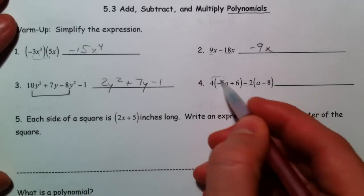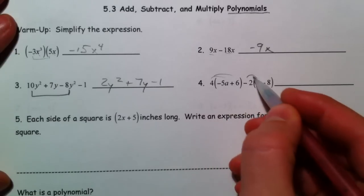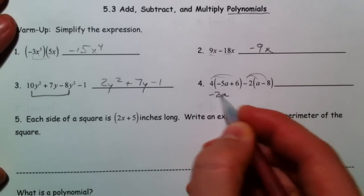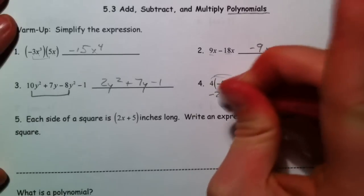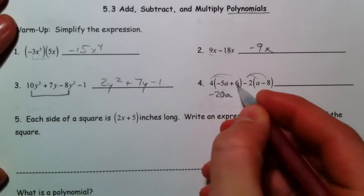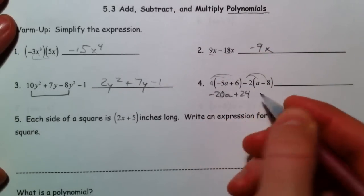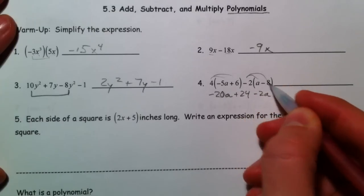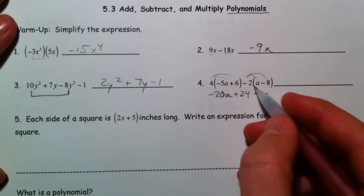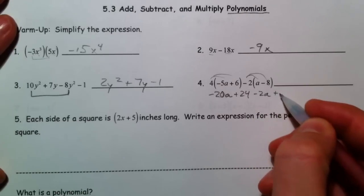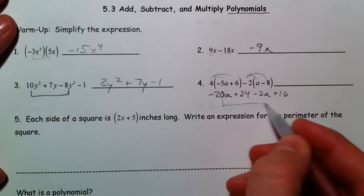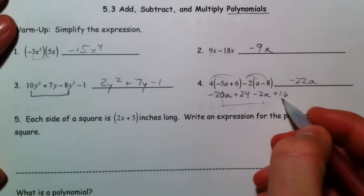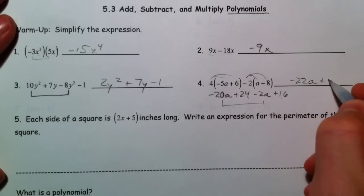This one we can distribute, just making sure you're careful of the signs. 4 times negative 5 is negative 20a, 4 times 6 is 24. Negative 2a. And that minus also applies to the last one, so negative 2 times negative 8 is a positive 16. So you get negative 22a, and 16 and 24 make 40.